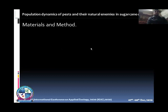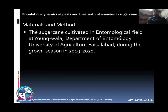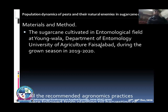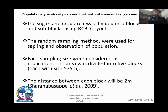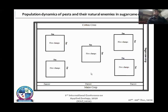For methodology, I conducted my study in the entomological field at Yangwala, Department of Entomology, University of Agriculture, Faisalabad, where all agronomic practices are followed. Here is my field picture. I used an RCBD layout for making blocks and sub-blocks, dividing the area into 5 blocks with a distance of 2 meters between each block. Random sampling method was used for observation of population, and each sampling unit was considered as a replicate. Here is the map of my study area showing the 5 divisions of the RCBD layout.